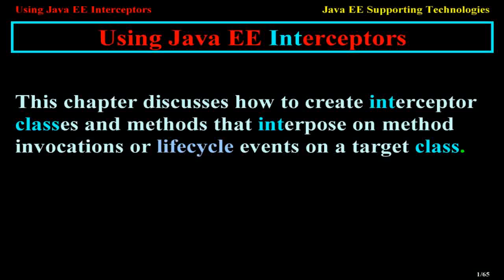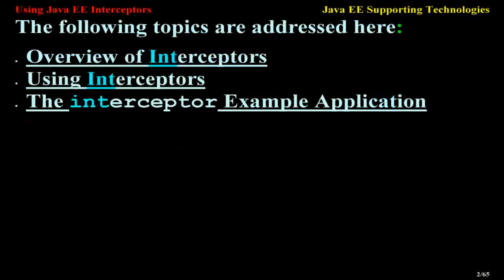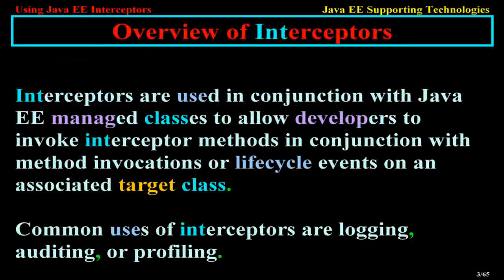Using Java EE Interceptors. This chapter discusses how to create interceptor classes and methods that interpose on method invocations or life cycle events on a target class. The following topics are addressed: Overview of Interceptors, Using Interceptors, and the Interceptor Example Application. Interceptors are used in conjunction with Java EE-managed classes to allow developers to invoke interceptor methods. Common uses of interceptors are logging, auditing, or profiling.